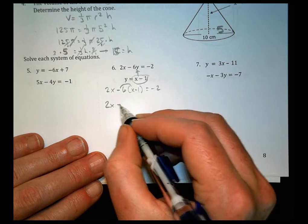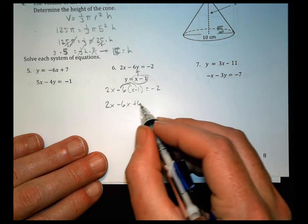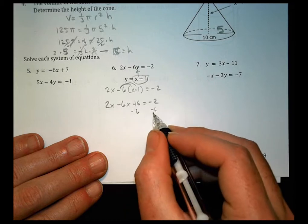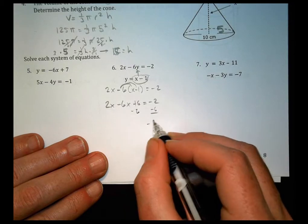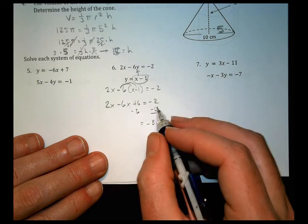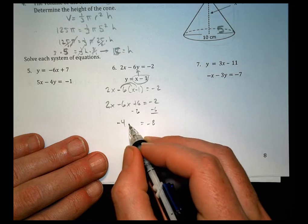We'll distribute the negative 6. Negative 6 times x is negative 6x. Negative 6 times negative 1 is positive 6 equals negative 2. We'll subtract 6, subtract 6. Over here, we have a negative 8 altogether, because signs are the same, we find the sum, keep the sign the same.